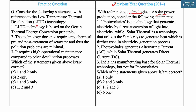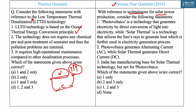The MCQ asks: 'Consider the following statements with reference to Low Temperature Thermal Desalination (LTTD) technology.' Statement one says LTTD technology is based on the ocean thermal energy conversion principle — this is correct. The technology uses the temperature gradient between the warmer top layer and the colder deeper layer, depressurizes the water so it evaporates at ambient temperature, then uses cold water to condense the evaporated water, harnessing potable water from saline water. Statement two says the technology does not require any chemical pre- and post-treatment of seawater, so pollution problems are minimal — this is also correct.